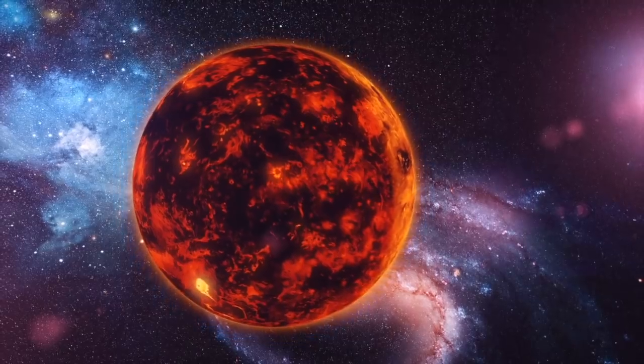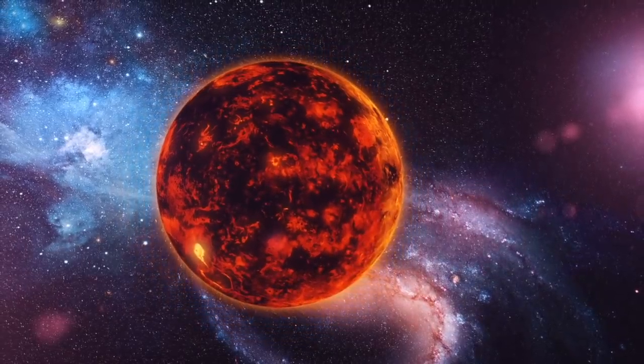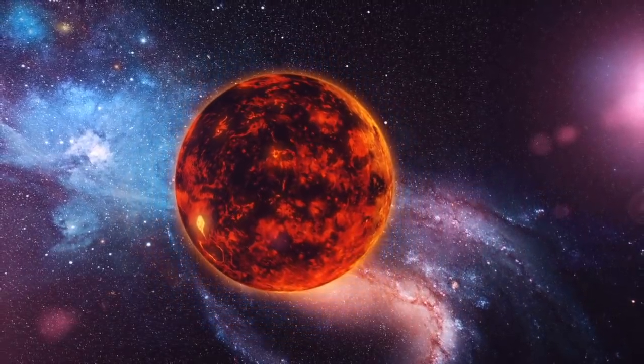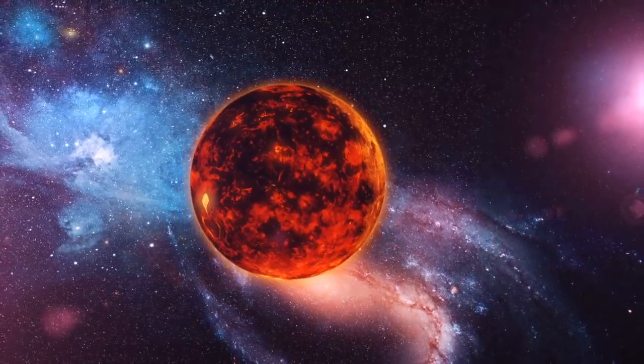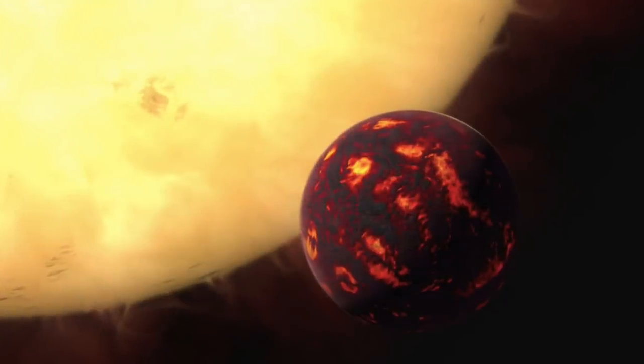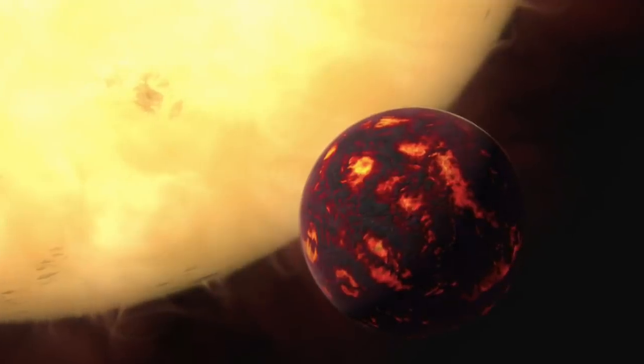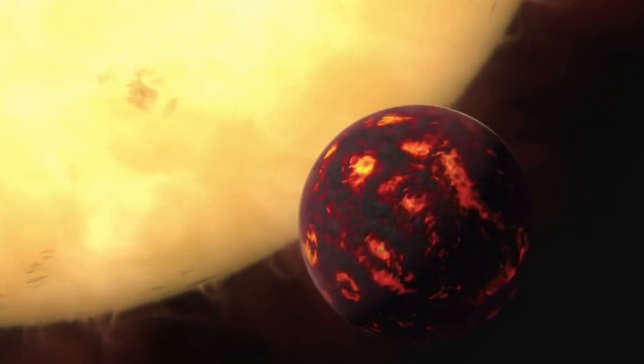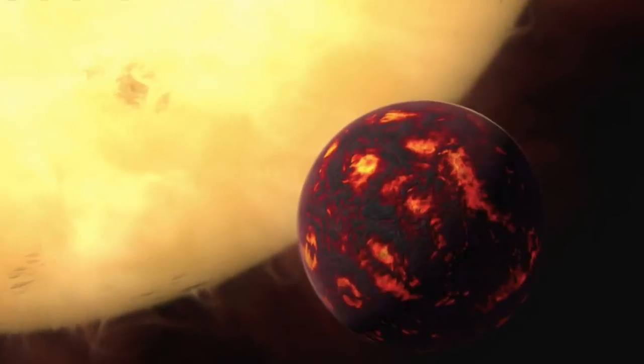If that doesn't make mining operations seem near impossible, the orbit of the planet around the sun takes less than 18 hours to complete. This means that an entire year on 55 Cancri e is less than a single day on Earth, making landing and launching to and from the planet nearly impossible to maintain.